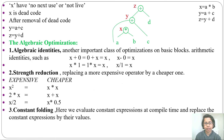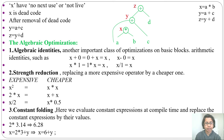Next is constant folding. Here we evaluate constant expressions at compile time and replace them with their value. For example, 2 multiplication 3.14 can be written as 6.28 — that is constant folding. Similarly, x equal to 2 multiplication 3 plus y can be written as x equal to 6 plus y.